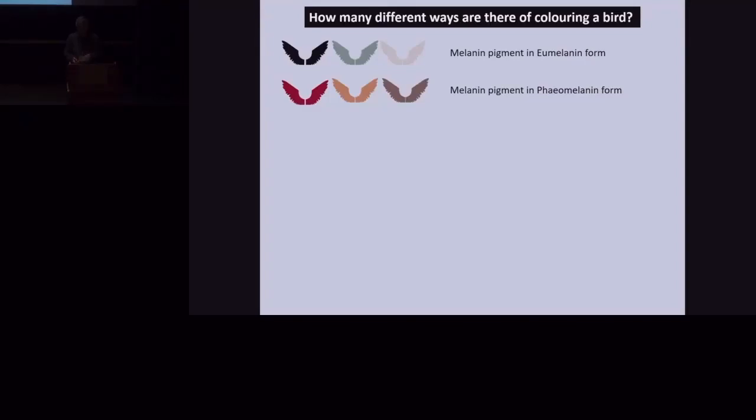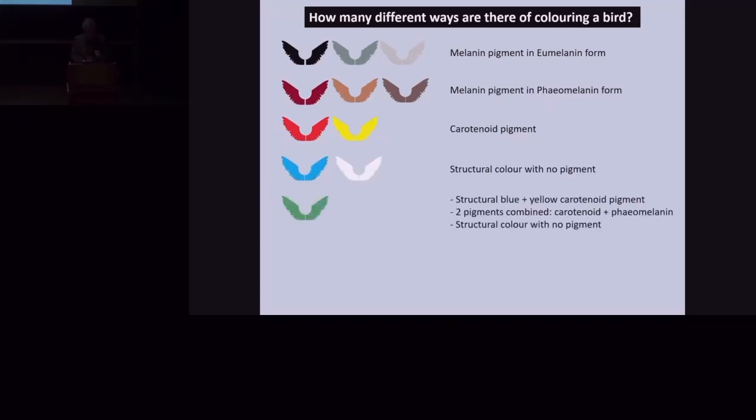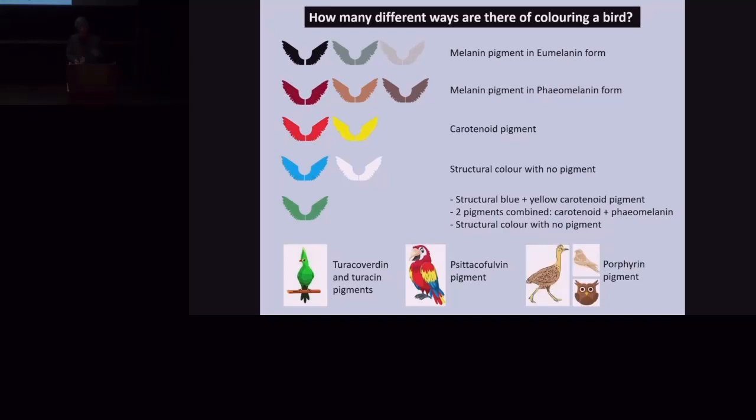So you might think, how many ways are there coloring a bird? And the answer is a lot. Eumelanin gives rise to greys and blacks. Pheomelanin generally light browns through dark browns to chestnuts. Bright reds and bright yellows are carotenoid-based pigments. Blues and whites are structural. There's no pigment involved. Greens are these three complicated different mechanisms. However, if you're a Turaco, Turacos have their own unique pigments that give their special greens and pinks. Parrots have their own special pigment that gives the yellows and the reds. And as I mentioned, the Bustards, Nightjars and Owls have their own porphyrin pigment.